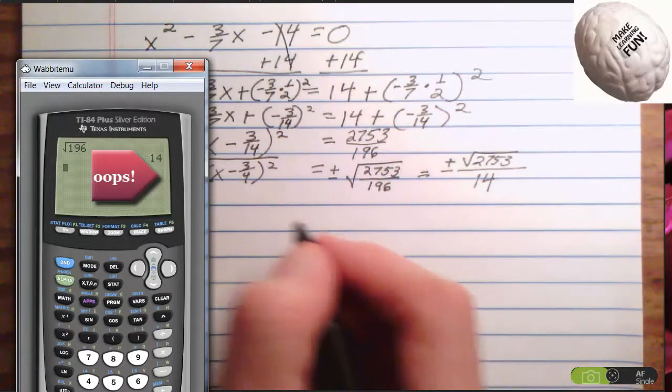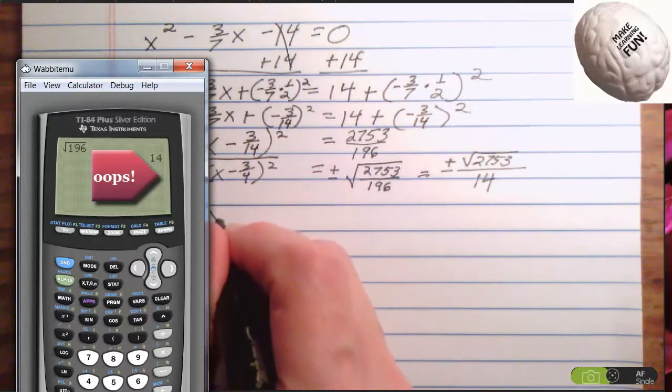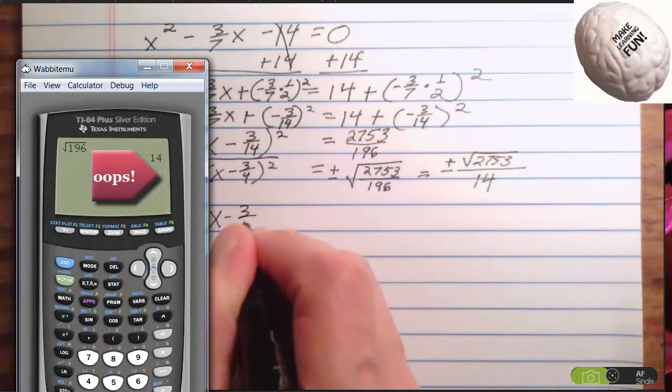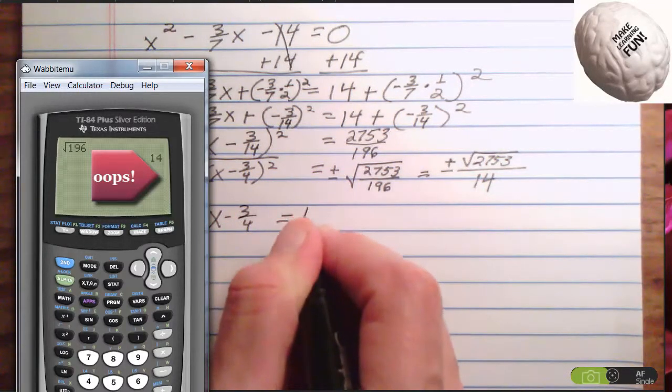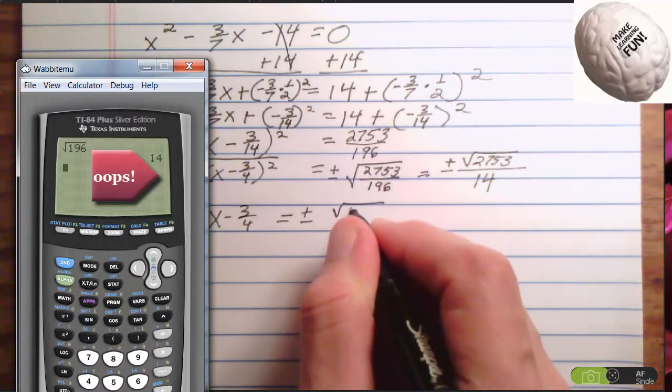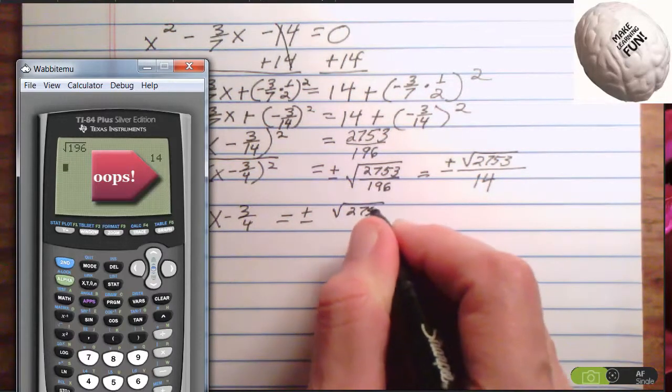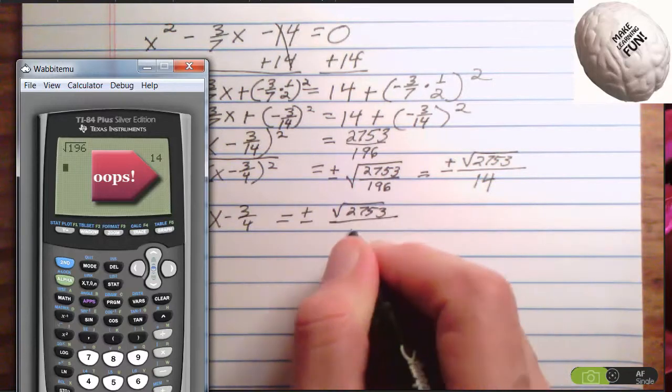So now I will have x minus 3 fourths equals plus or minus the square root of 2753 over 14.